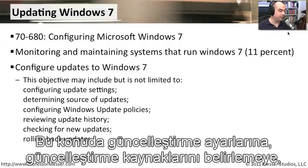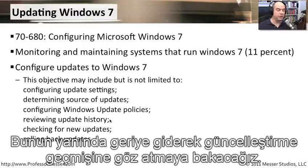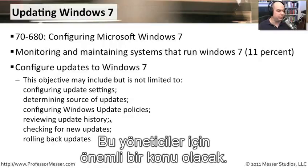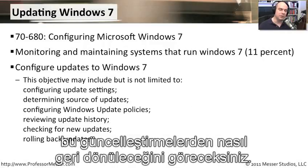We're going to look at configuring update settings and determining the source of the updates. We'll look at how you can set Windows Update policies, review your update history — which will be important for administrators — check for new updates, and if there's a problem, how to roll back some of those updates.